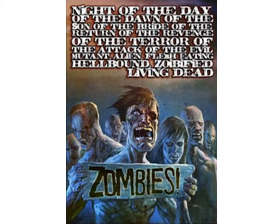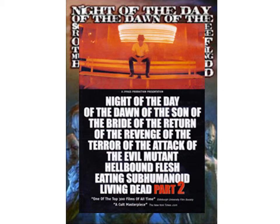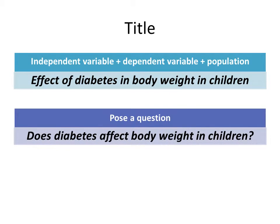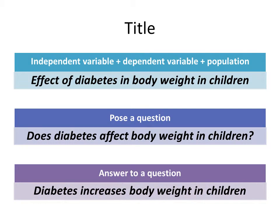The title is probably one of the most important and difficult parts of the paper. There are three major title formats. The first is an independent variable plus a dependent variable plus a population — for example, 'the effect of diabetes on body weight in children.' The second poses a question: 'Does diabetes affect body weight in children?' And the third is an answer to a question: 'Diabetes increases body weight in children.' You can follow any of these formats.